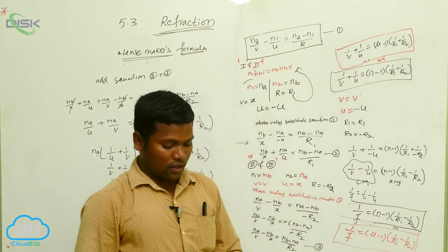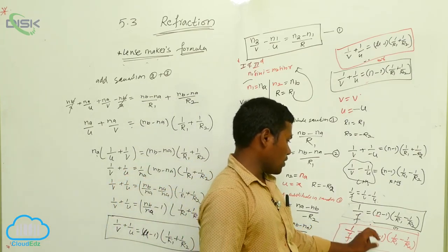Okay, these two we are calling the lens maker formula. Either you can use this formula or this formula.